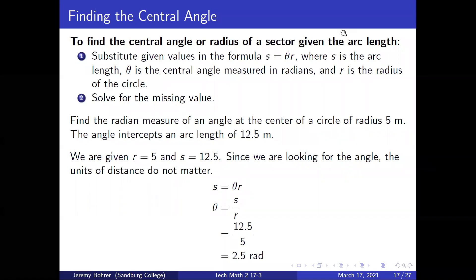Continuing where we left off in the last video: finding the central angle. To find the central angle or radius of a sector given the arc length, first substitute given values in the formula s equals theta r, where s is the arc length, theta is the central angle measured in radians, and r is the radius of the circle. Then solve for the missing value.